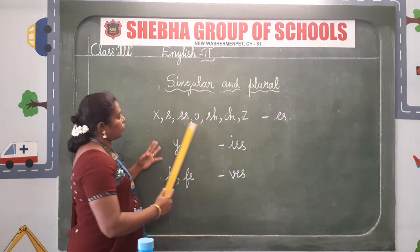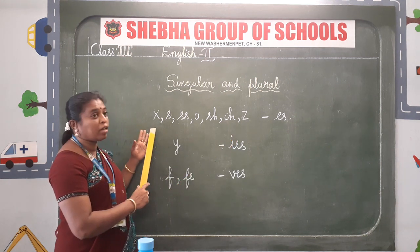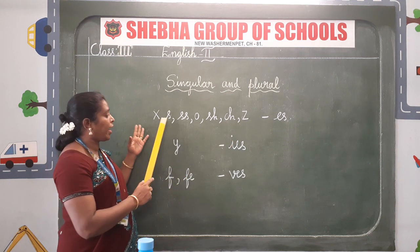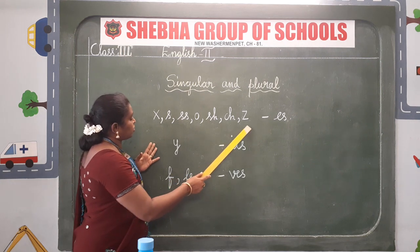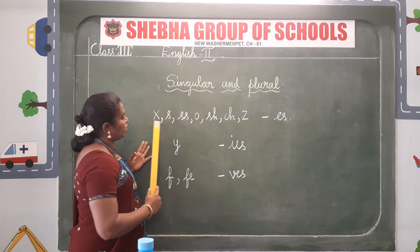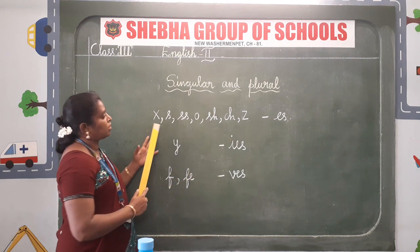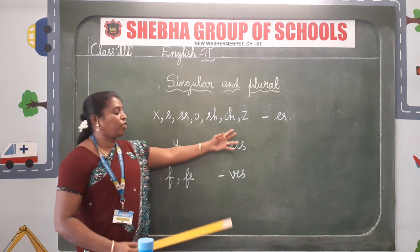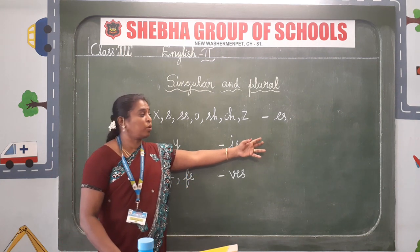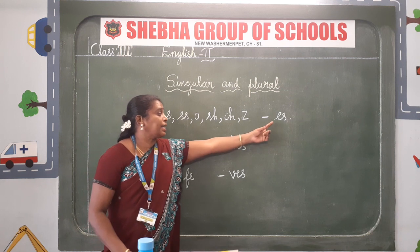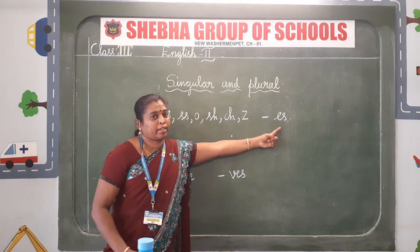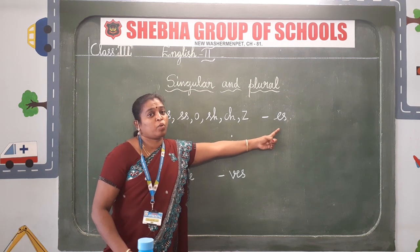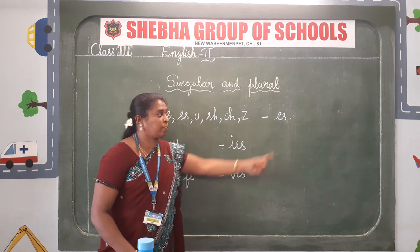If the singular noun ends with X, S, SS, O, SH, CH, or Z, then we are going to add ES to make it a plural noun. If the word ends with Y, we are going to add IES. If the singular noun ends with F or FE, we are going to add VES to make it a plural noun.